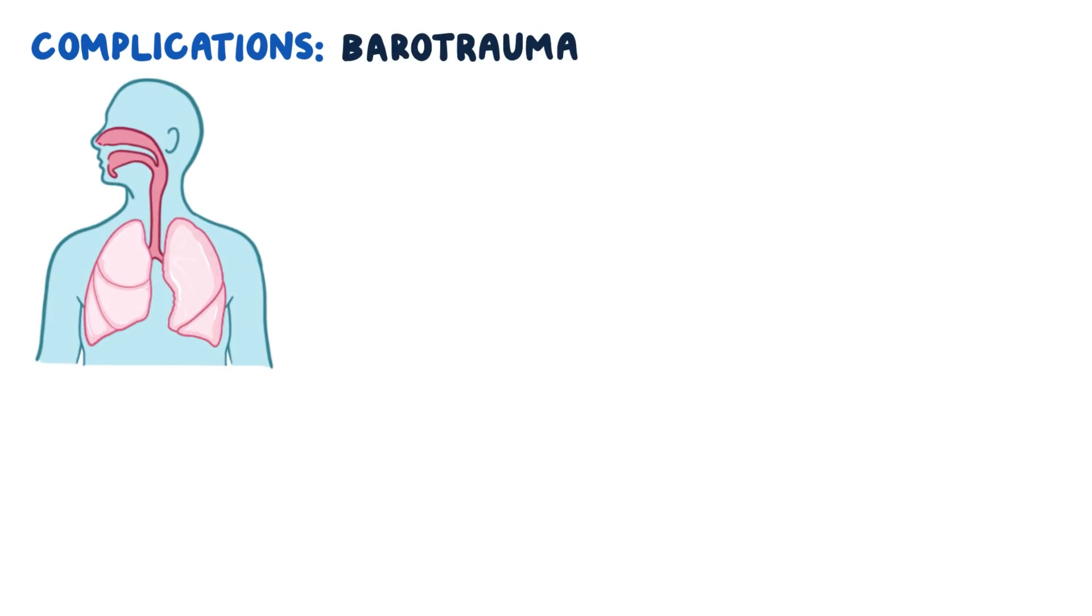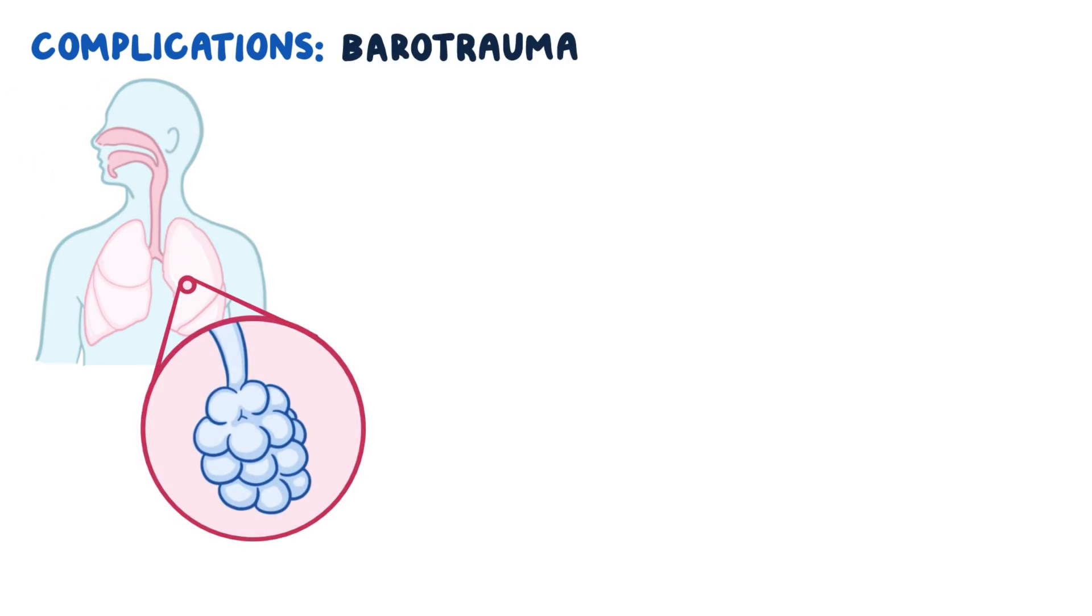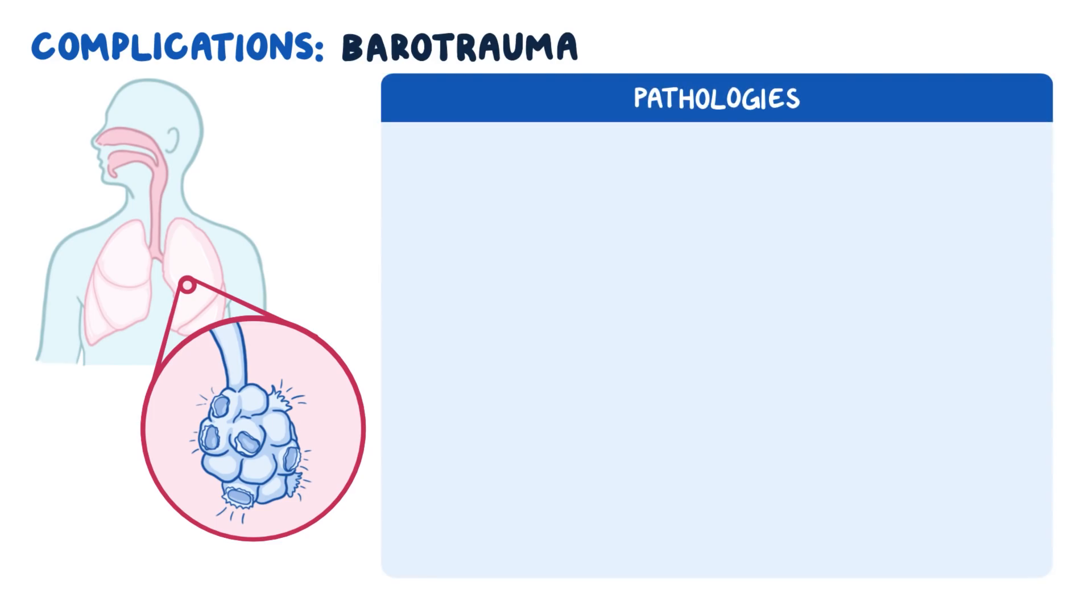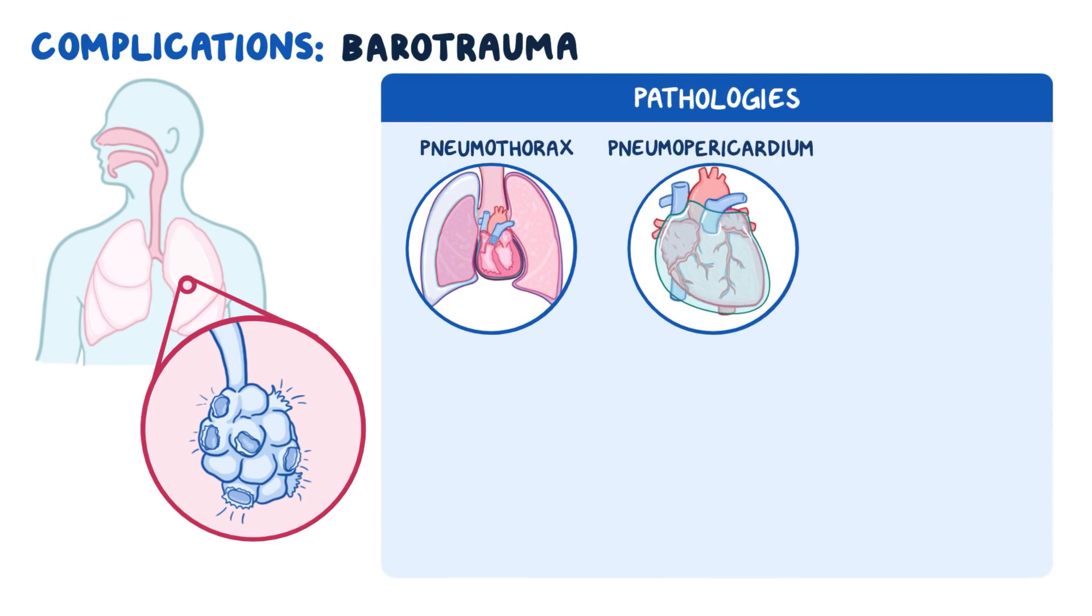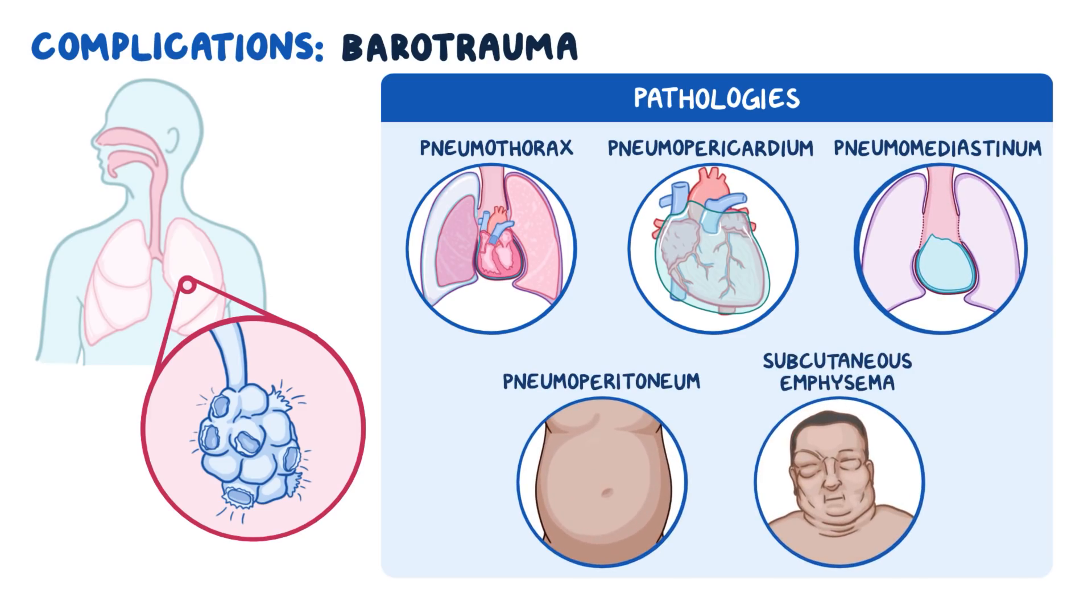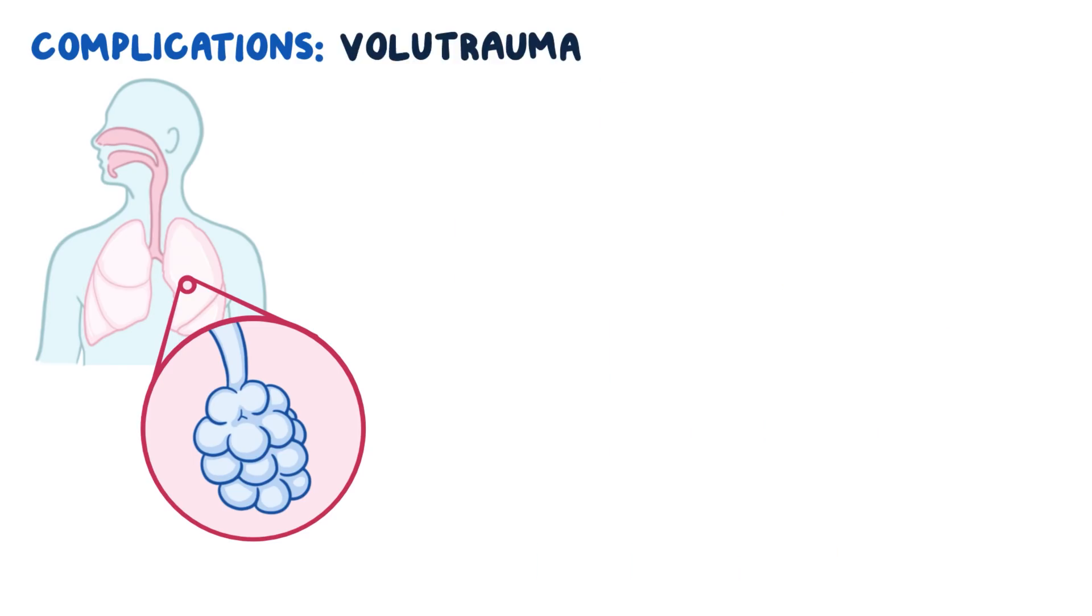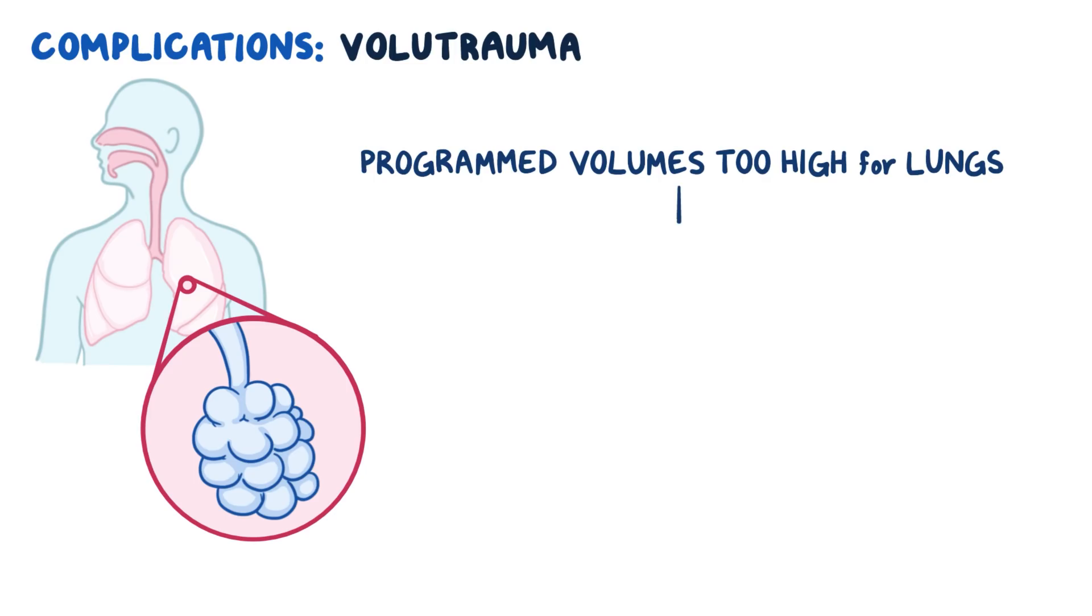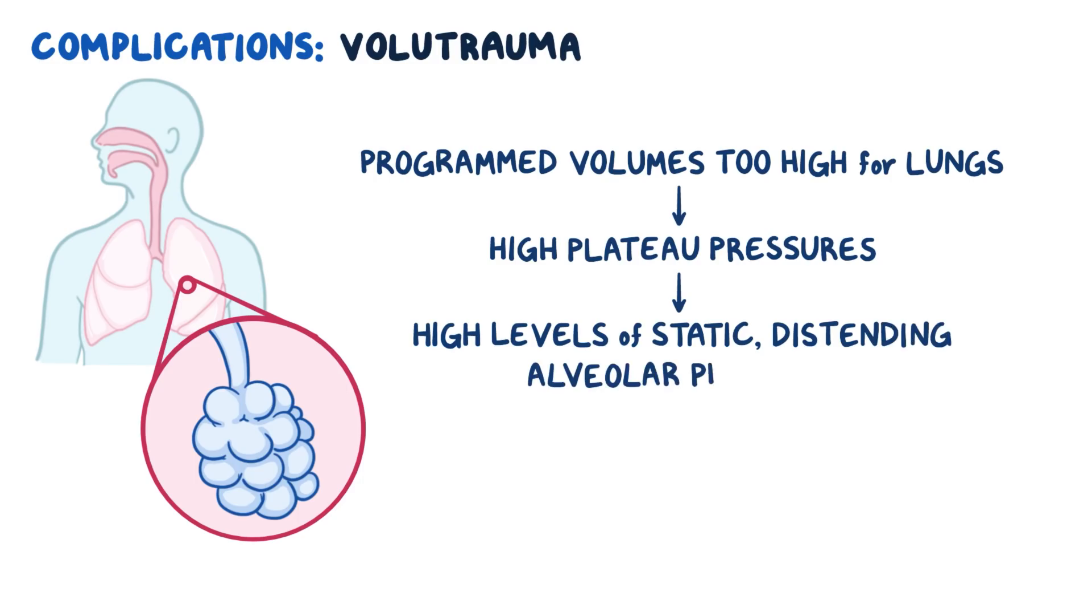Really high MPA can also cause barotrauma or air leak disease. The increase in intrathoracic pressure from the positive pressure ventilation can cause extra pulmonary damage to occur. This pressure damage causes pneumothorax, pneumopericardium, pneumomediastinum, pneumoperitoneum, and subcutaneous emphysema. Volume trauma occurs if volumes are too high for lungs that are stiff and non-compliant. Large volumes create high plateau pressures, meaning high levels of static distended alveolar pressure, which can damage the already compromised lungs.